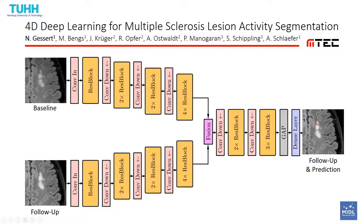Previously this has been done using a two-path U-Net architecture with an encoder for each image volume followed by joint processing in a decoder. Often there are more than just two scans available for each patient, so we investigate whether we can add more scans from a more distant history to get more consistent estimates.